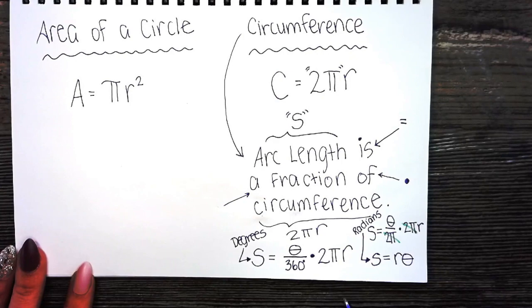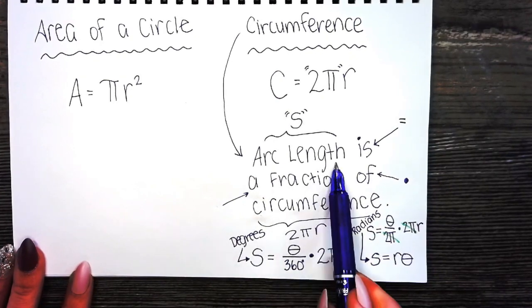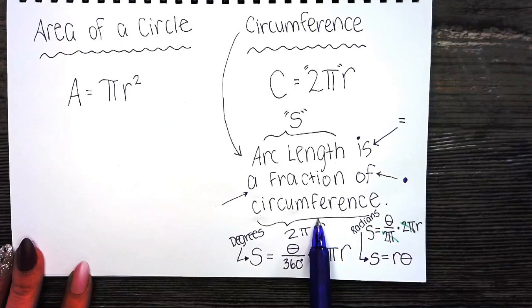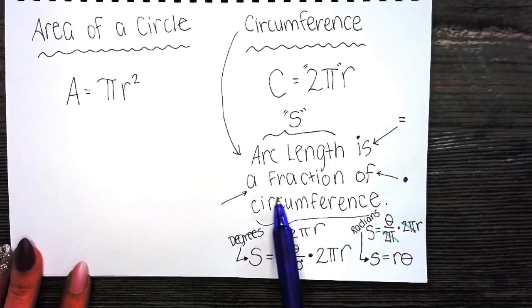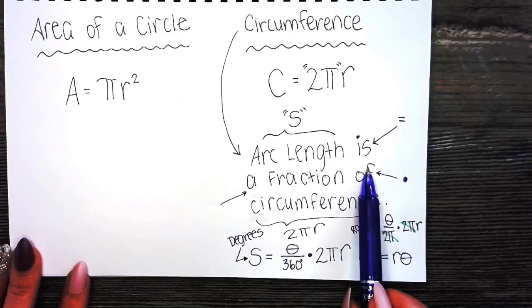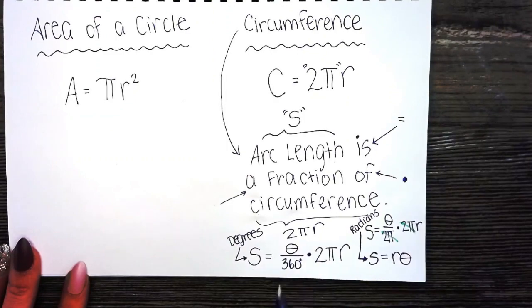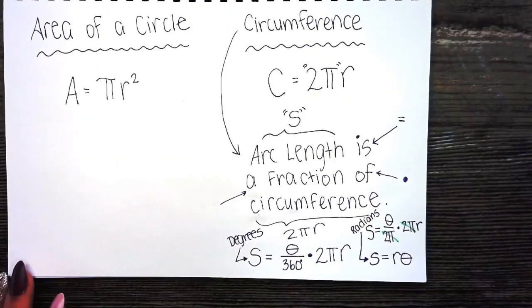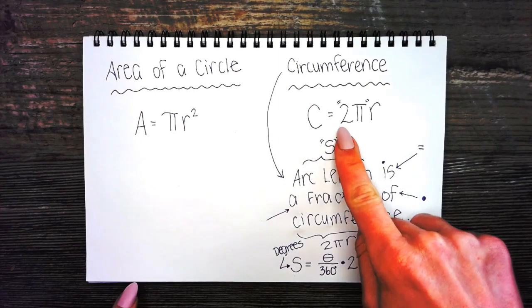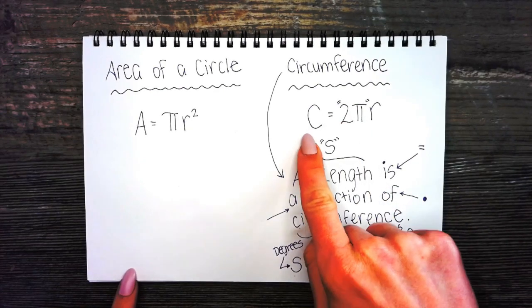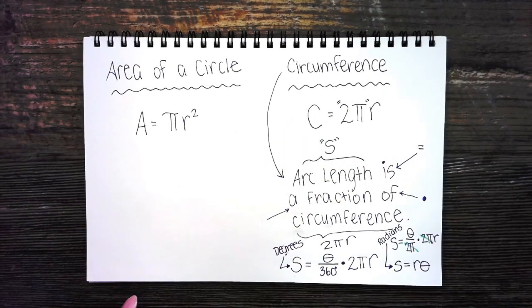In conclusion, whenever you're finding arc length, your best bet is to remember that it's a fraction of the circumference. Arc length s equals a fraction, look at your problem. Is it degrees or radians, of multiply circumference 2 pi r. 2 pi is actually a radian measure. It makes sense because one full revolution is relevant to the circumference.